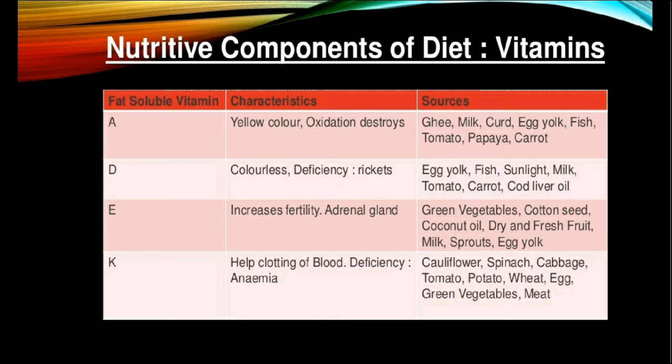The sources of vitamin A are ghee, milk, curd, egg yolk, fish, tomatoes, papaya, green vegetables, orange, spinach, carrot and pumpkin.